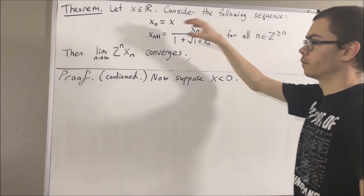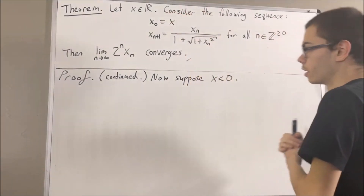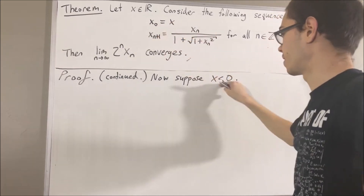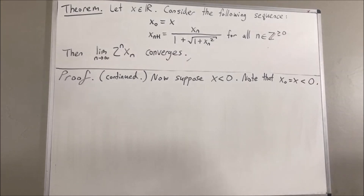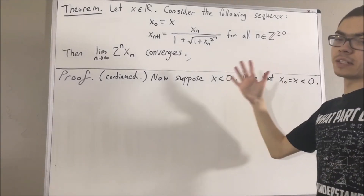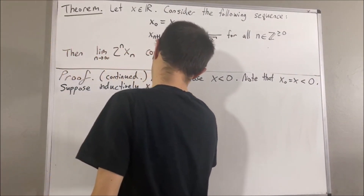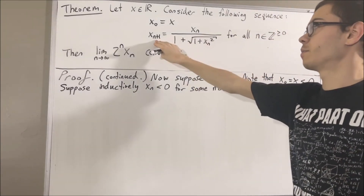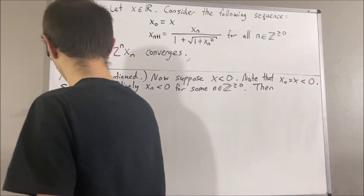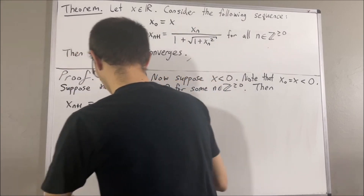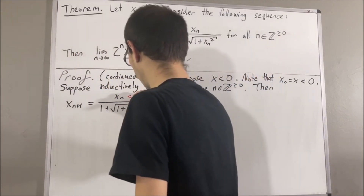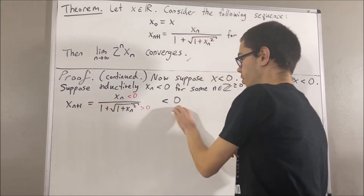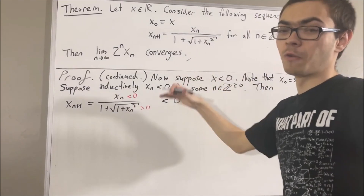In this case, we're going to show that all the xn's must be less than 0, and we'll establish that by induction. The base case is already done because x0 is equal to x, which is less than 0. For the induction step, we suppose inductively that xn is less than 0 for some n. To see that xn+1 is also less than 0: by definition, xn+1 is this expression. We know that xn is less than 0, but the denominator is greater than 0, so this entire expression must be less than 0. So xn+1 is less than 0. By induction, we have established that xn is less than 0 for all n.